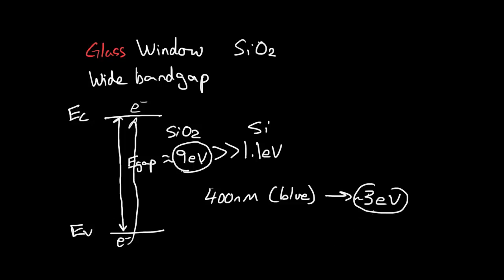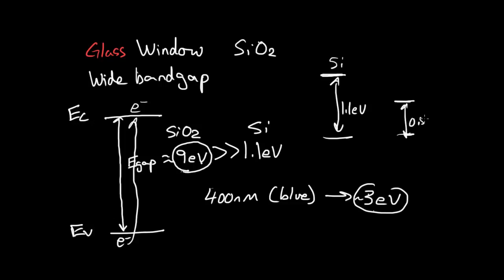One more quick point: the band gap is going to determine your wavelength response. When you get out towards longer wavelengths than visible light — like towards the infrared region — you're going to want a smaller band gap. So instead of 1.1 eV for silicon, you may want something like 0.5 eV or smaller. I'll cover that in future videos.